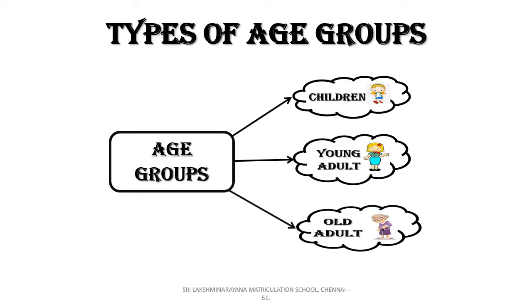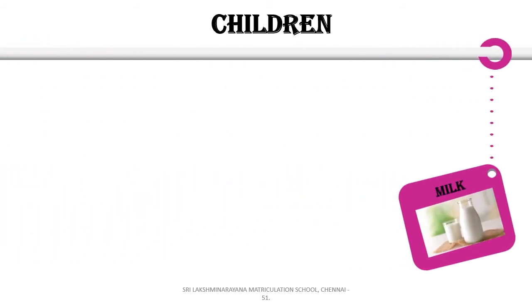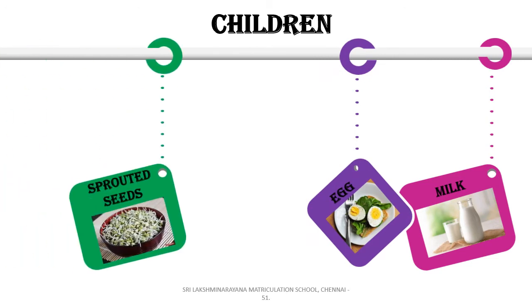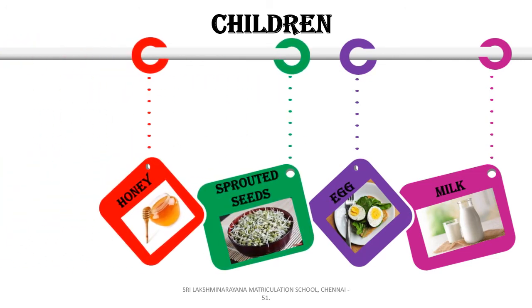The three groups are children, young adults, and old adults. First, we will see about the food items children should eat for growth and development of good health. Some examples are milk, egg, sprouted seeds, honey, and fruits.